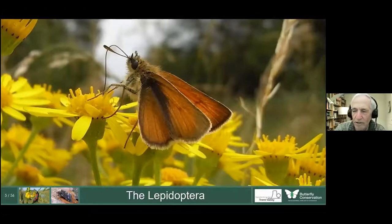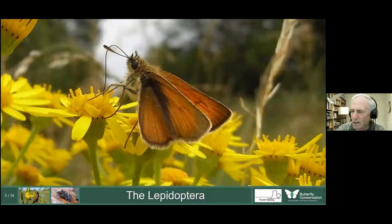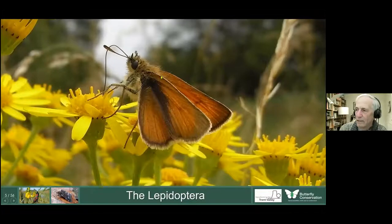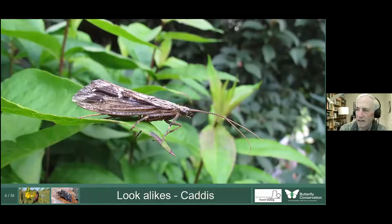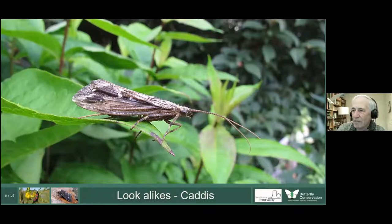The other thing characterising moths and butterflies is the proboscis, which is usually coiled up inside the mouth — there are one or two primitive species which don't have a coiled proboscis, but on the whole scales plus a coiled proboscis makes it a Lepidoptera. The nearest thing causing confusion with people are the caddisflies, which don't have scales on the wings — they have hairs, hence the name Trichoptera, meaning hairy-winged.